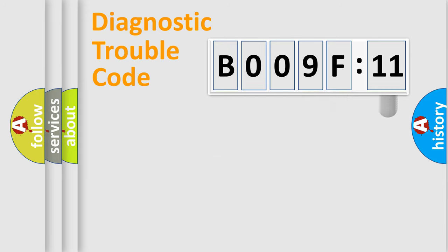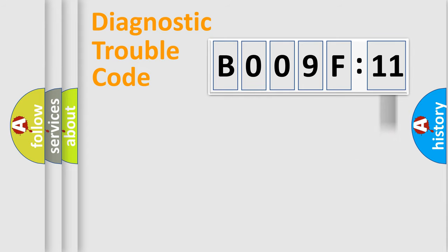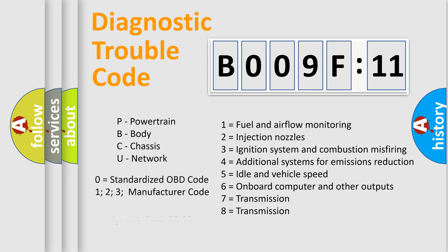The add-on to the error code serves to specify the status in more detail — for example, a short to ground. This division is valid only when the second character code is expressed by the number zero.